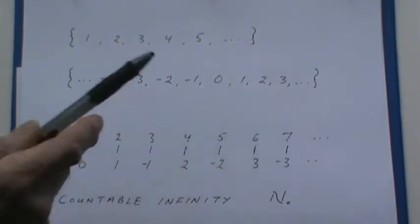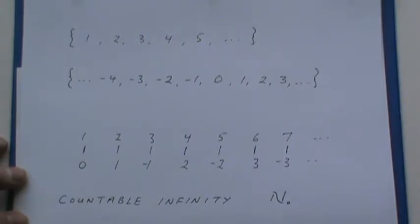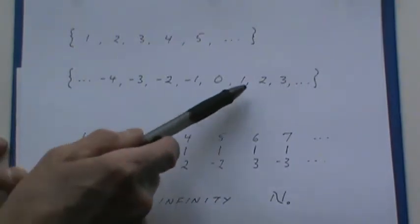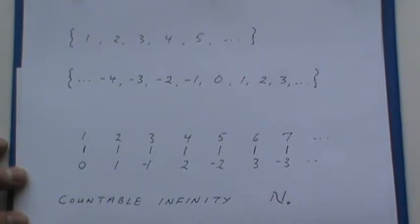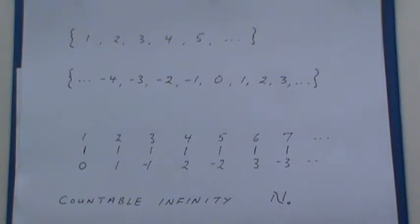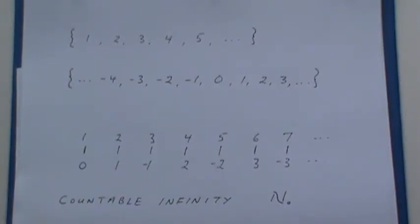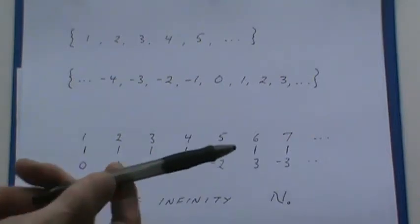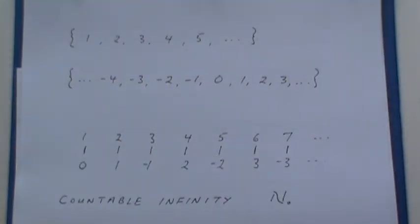We refer to this as a countable infinity — the same order of infinity as the natural numbers. We give it the symbol aleph-naught, or aleph-zero, to describe any set which is, in mathematics, a countable set: one where we can take the elements and count them, leaving no gaps, not leaving anybody out. Somewhere we're going to get to any number in this set and assign it a counting number.